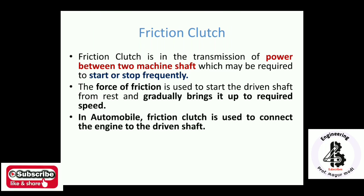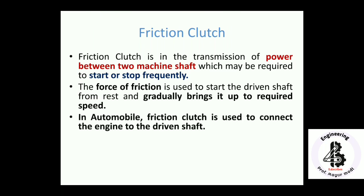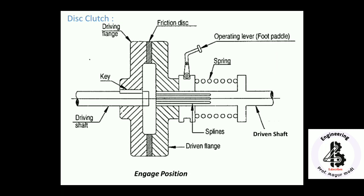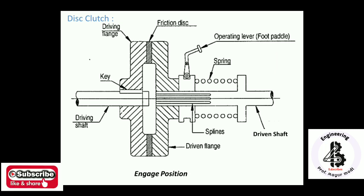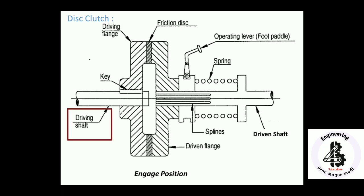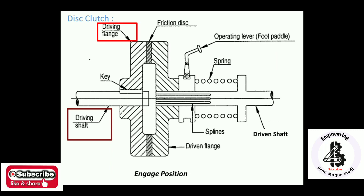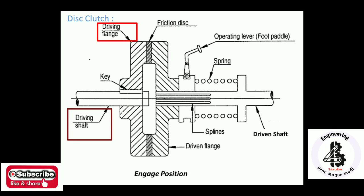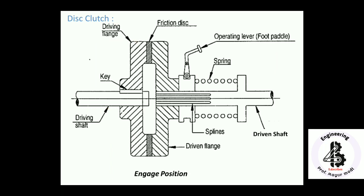In an automobile, the friction clutch is used to connect the engine to the driven shaft. Here the single disc clutch is shown. The figure shows the engaged position of the driving flange to the driven flange. On the left side, the driving shaft is connected to the driving flange using a key, and the driving flange is permanently attached to the driving shaft.